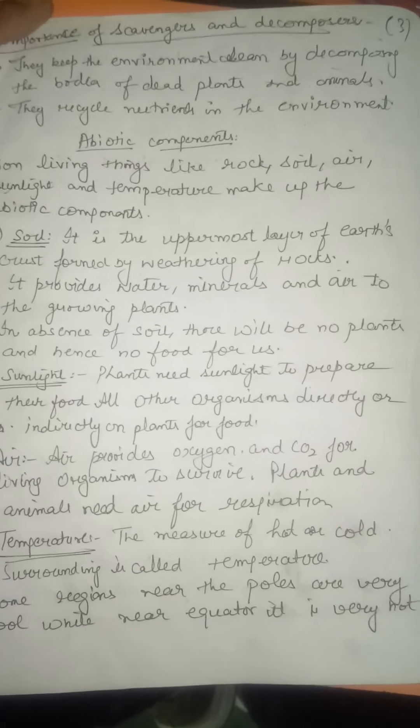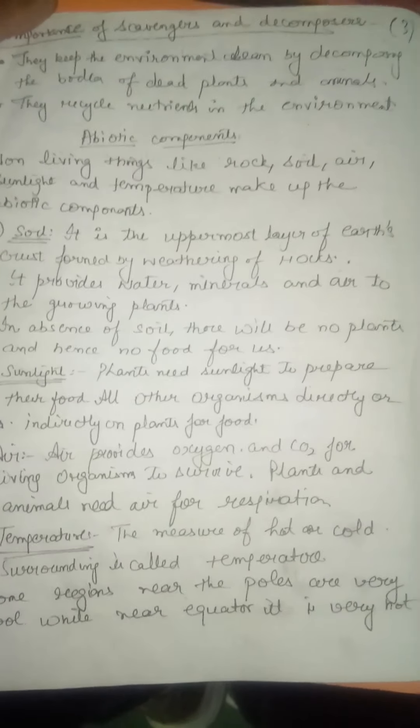In the absence of soil, there will be no plants. Without plants, we will not get food and we will not be able to survive. There will also be no rainfall, leading to droughts everywhere, and the amount of carbon dioxide gas in the atmosphere will increase, leading to global warming, melting of glaciers, and floods.